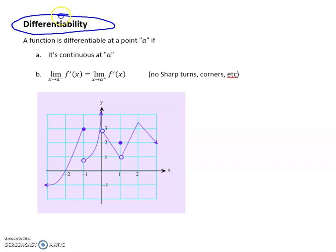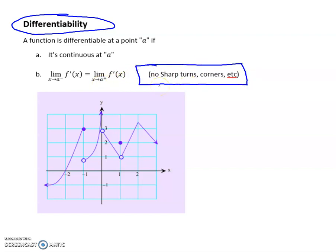Let's talk about what it means to be differentiable, which means you can take the derivative. A function is differentiable at a particular x value — we call that a — if, first, the graph is continuous through that x value, and second, the derivative, meaning the slope coming from the left and the slope coming from the right, are the same. That's basically where it would fail — having a sharp turn or corner. Looking at the graph: not differentiable at negative 1 (not continuous), not at 0 (not continuous), not at 1 (not continuous), and not at 2 even though it's continuous, because there's a sharp turn there.